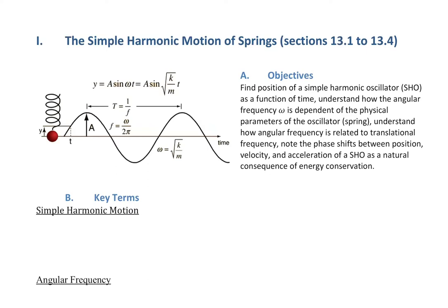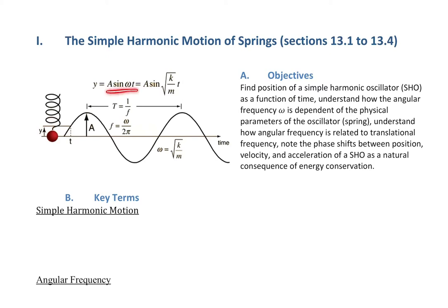It's all about sine and cosine functions — it's all about trigonometry. This picture is a great introduction: it shows a spring bouncing up and down, maybe because someone pulled on it and released it. Attached to this spring is a pin or marker, and underneath is a steady conveyor belt of paper. As the spring bounces up and down, it draws a path on the paper as the paper steadily moves to the right. The path it draws is a sine curve — the motion is absolutely sinusoidal.